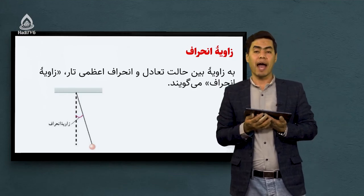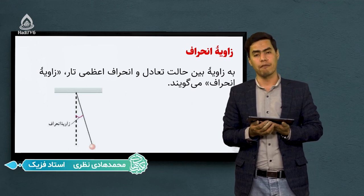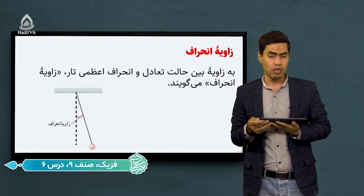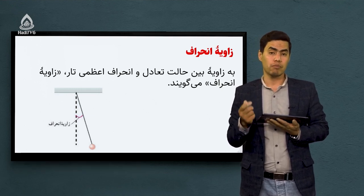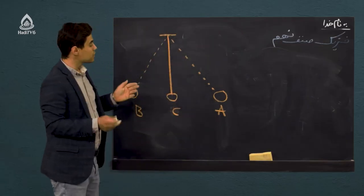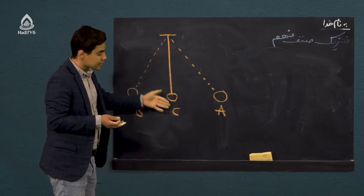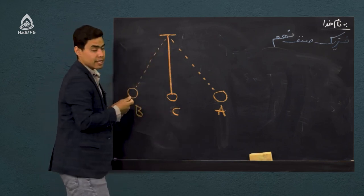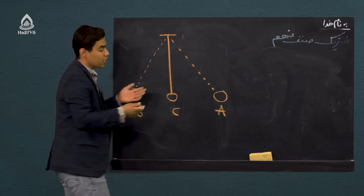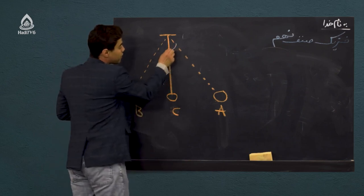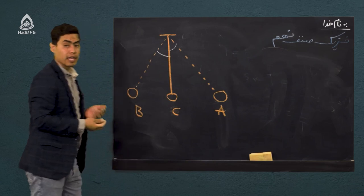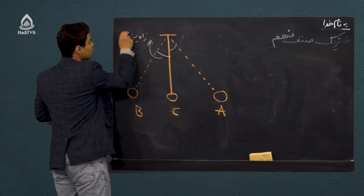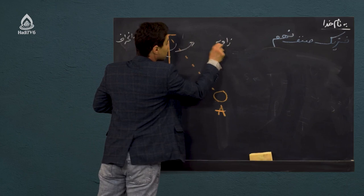مشخصه بعدی که باید یاد بگیریم زاویه انحراف است. زاویه انحراف زاویه‌ای است که بین حالت تعادل و انحراف اعظمی ایجاد میشه. نقطه C نقطه تعادل است و این خط هم خط تعادل است. زاویه‌ای که بین خط تعادل و بیشترین انحراف یعنی انحراف اعظمی ایجاد میشه زاویه انحراف است. هم این زاویه و هم آن زاویه را زاویه انحراف میگیم.